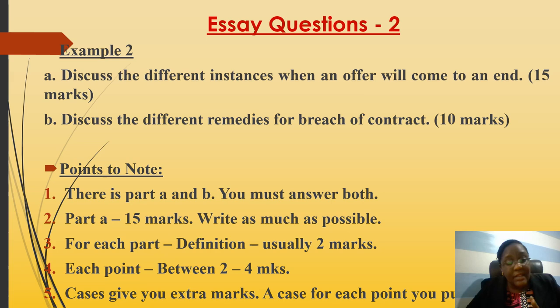Another example of an essay question has part A and part B. Part A might have 15 marks and part B 10 marks, or sometimes 13 and 12. Make sure you answer each part of the question — if you only answer part A, you only earn 15 out of 25 marks. Answer both parts, keep the marks allocation in mind, and write as much information as possible to earn those marks.